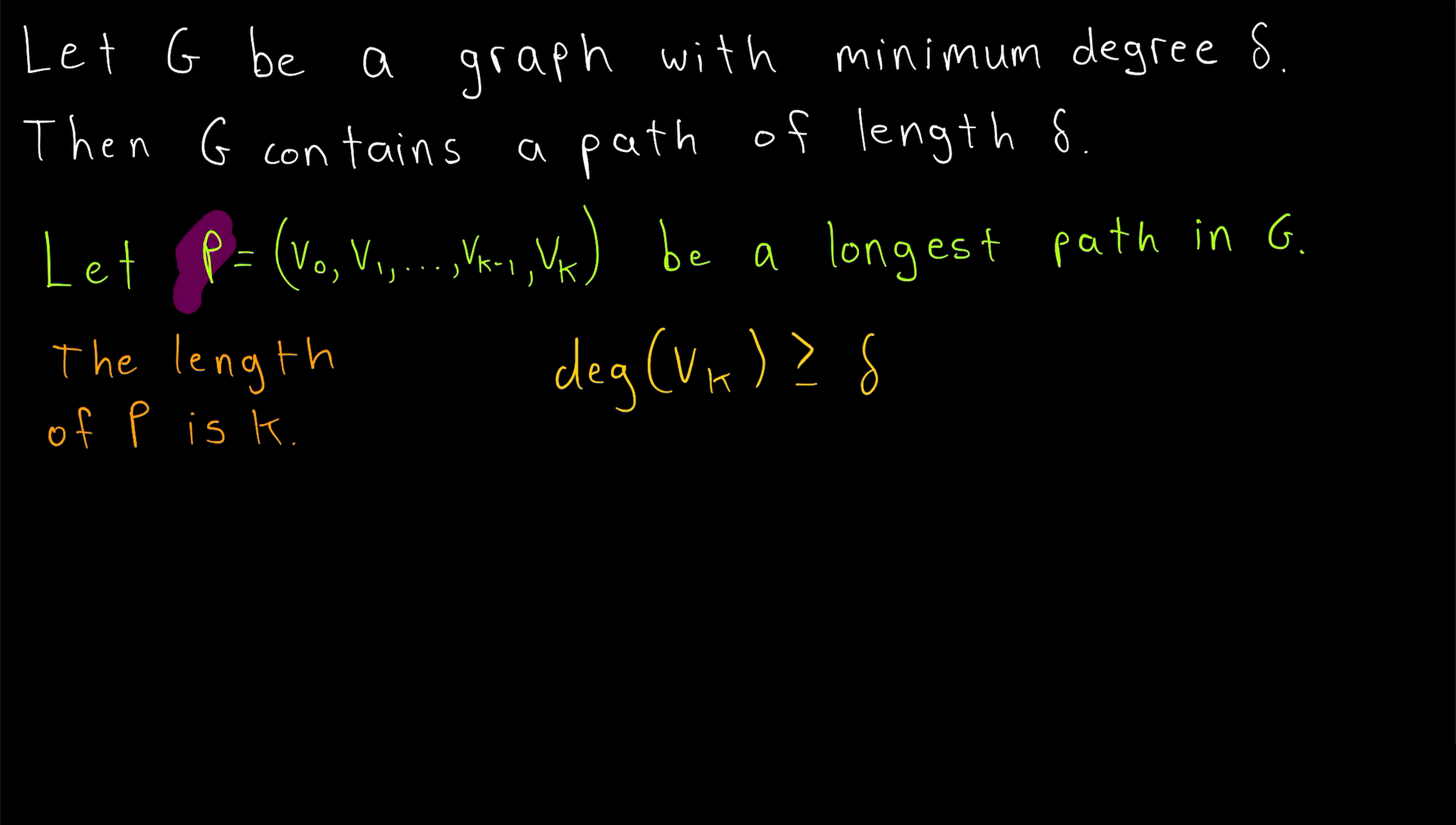Then, P being a longest path means that these at least delta neighbors of vk must all lie among these other vertices in the path. If there was some neighbor of vk not on the path, then we could extend the path by including that neighbor of vk, which would be a longer path contradicting the definition of this path being a longest path in the graph.